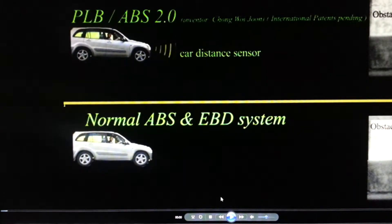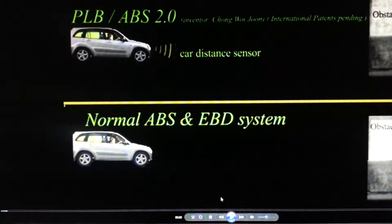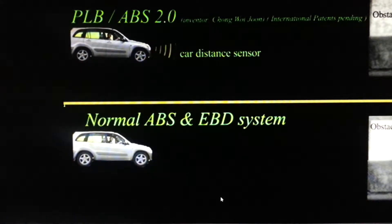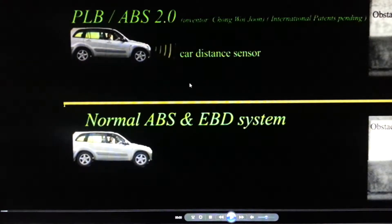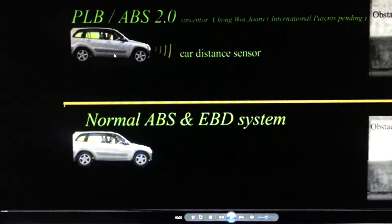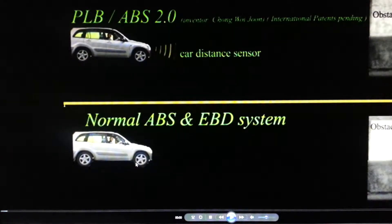Today I want to show you the difference between PLB — Pre-Crash Lock Wheel Braking system — and a normal ABS/EBD system. The upper one is the car equipped with PLB; the lower one is a car with just a normal ABS and EBD system.